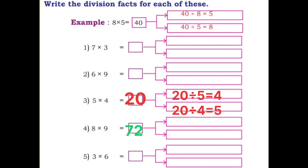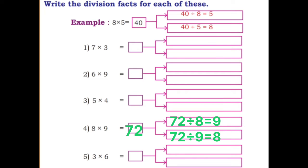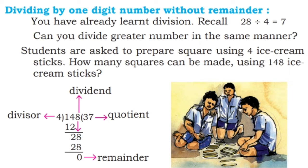5 fours are 20: 20 divided by 5 is equal to 4, and 20 divided by 4 is equal to 5. 8 nines are 72: 72 divided by 8 is equal to 9, and 72 divided by 9 is equal to 8. 3 sixes are 18: 18 divided by 3 is equal to 6, and 18 divided by 6 is equal to 3.